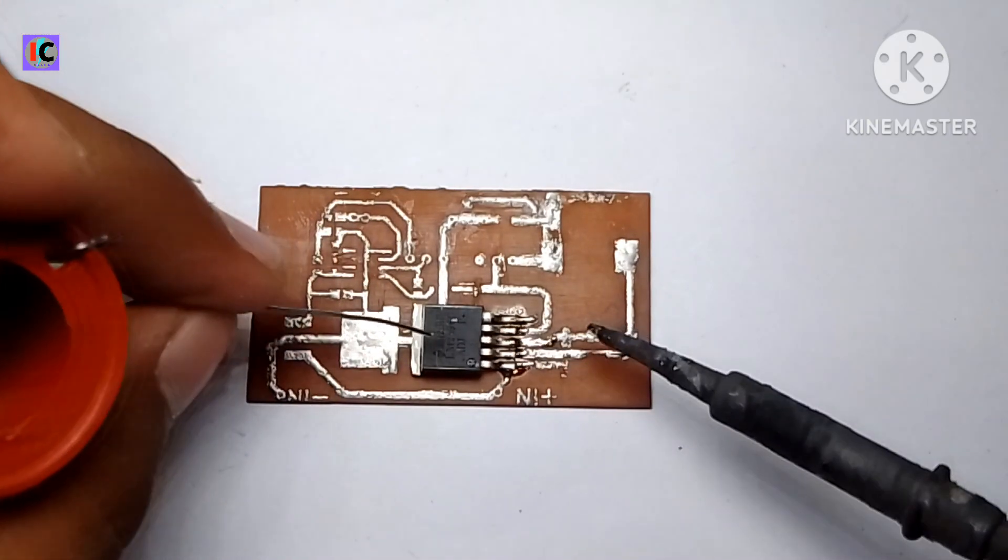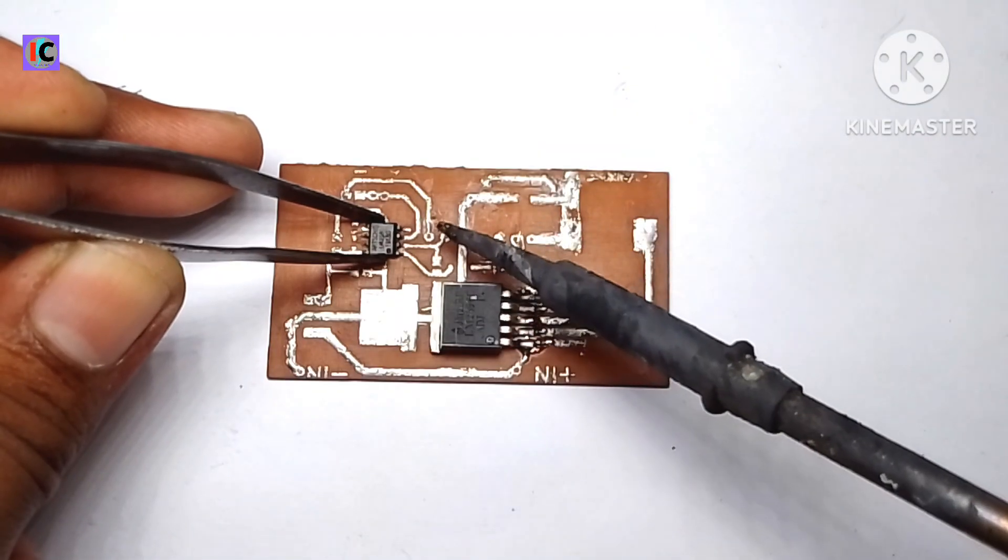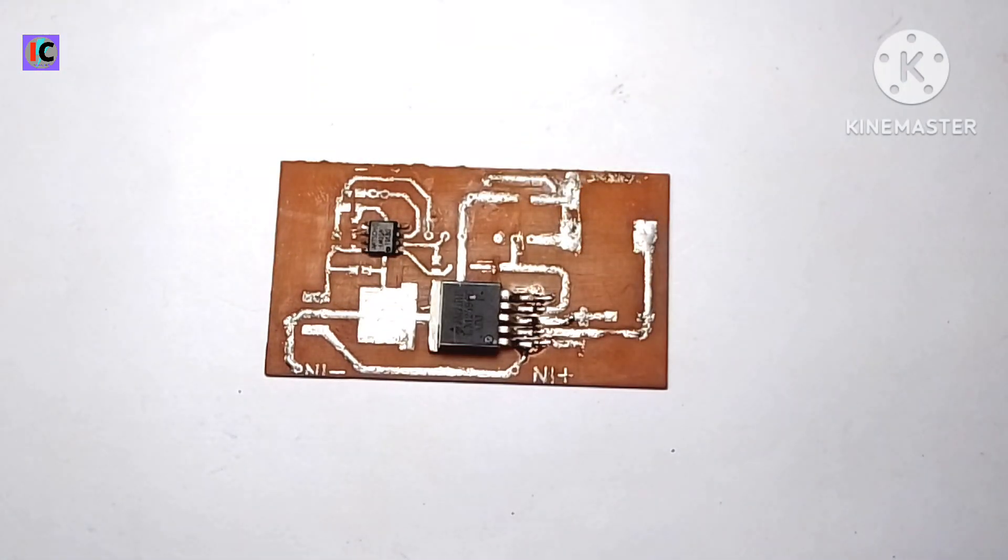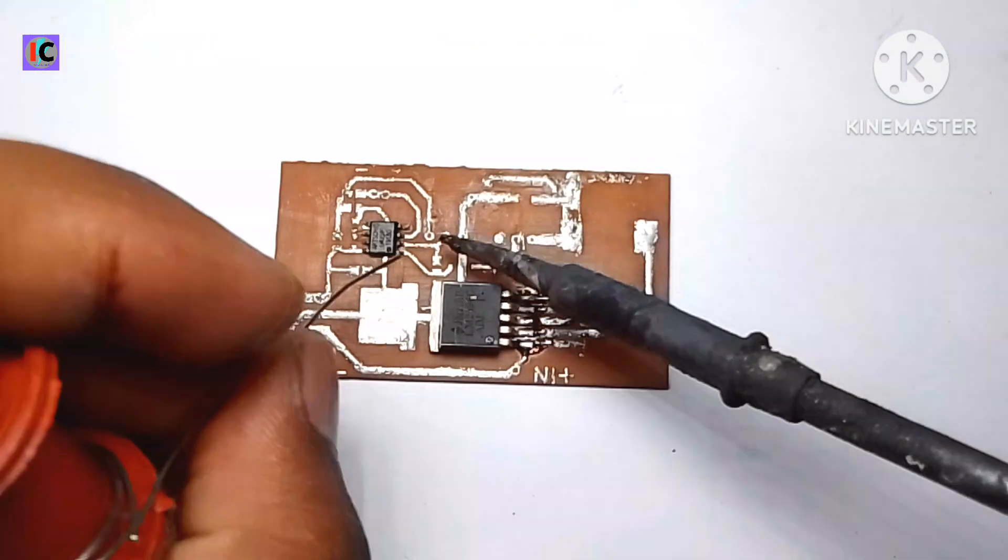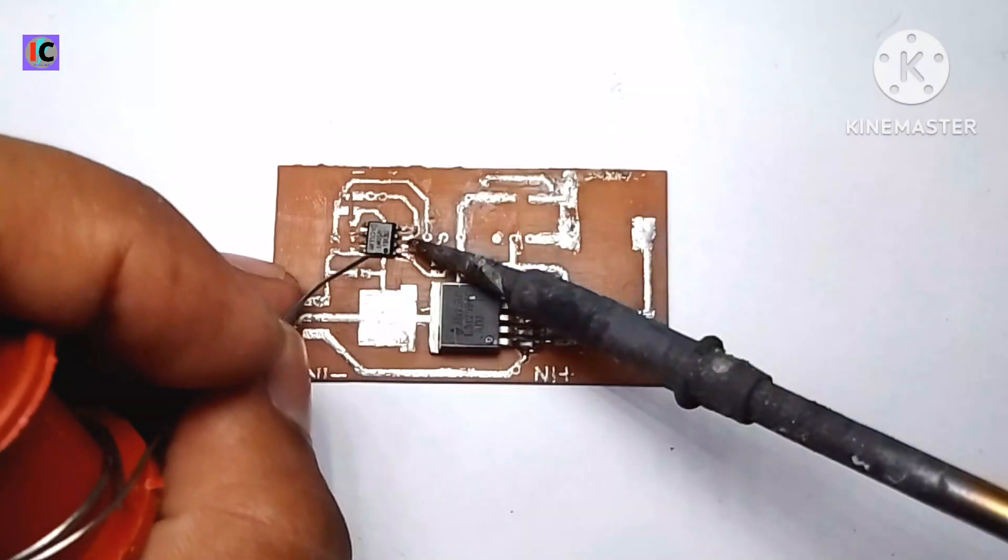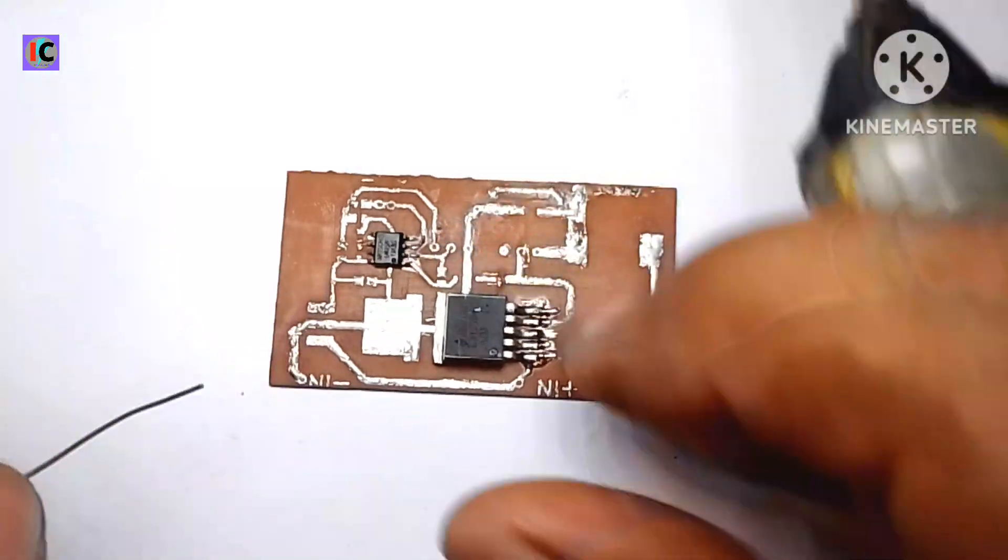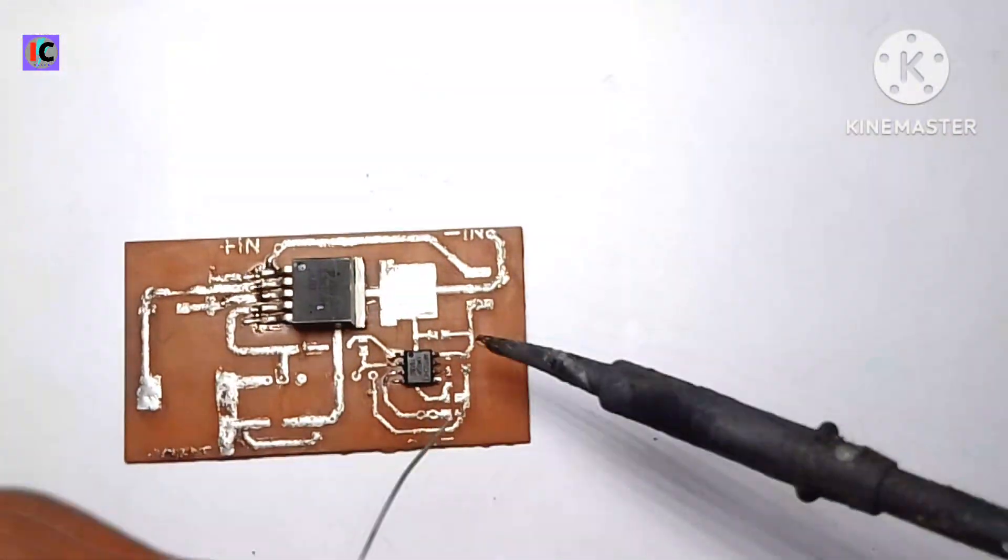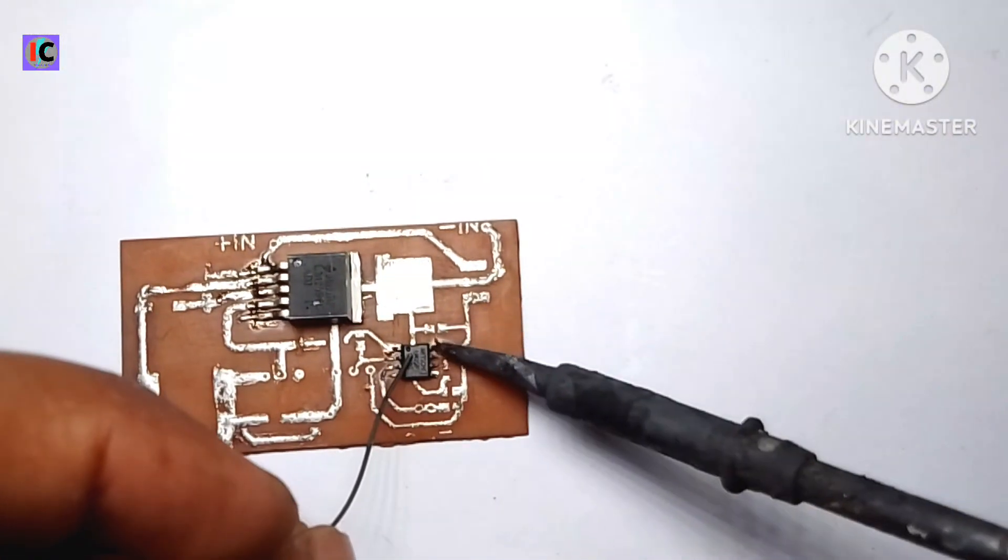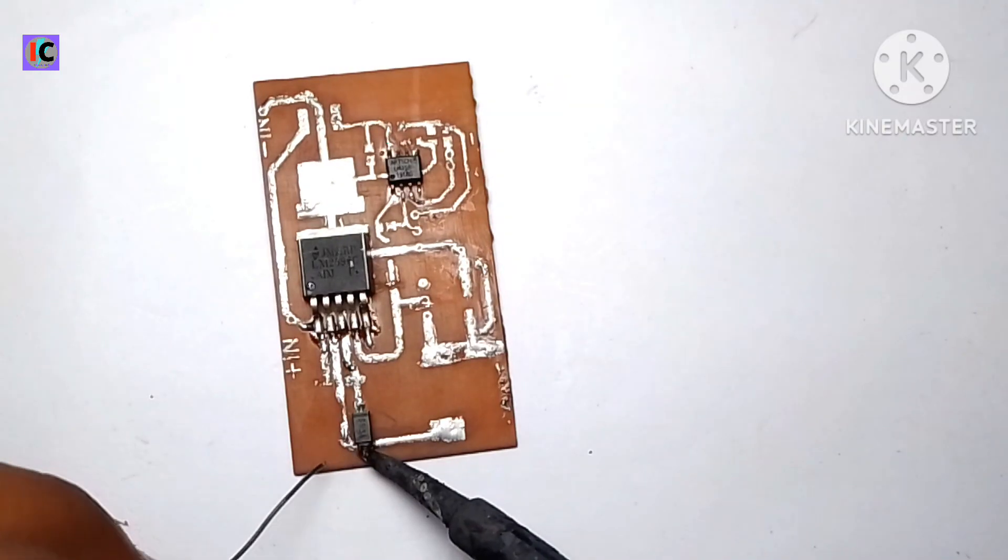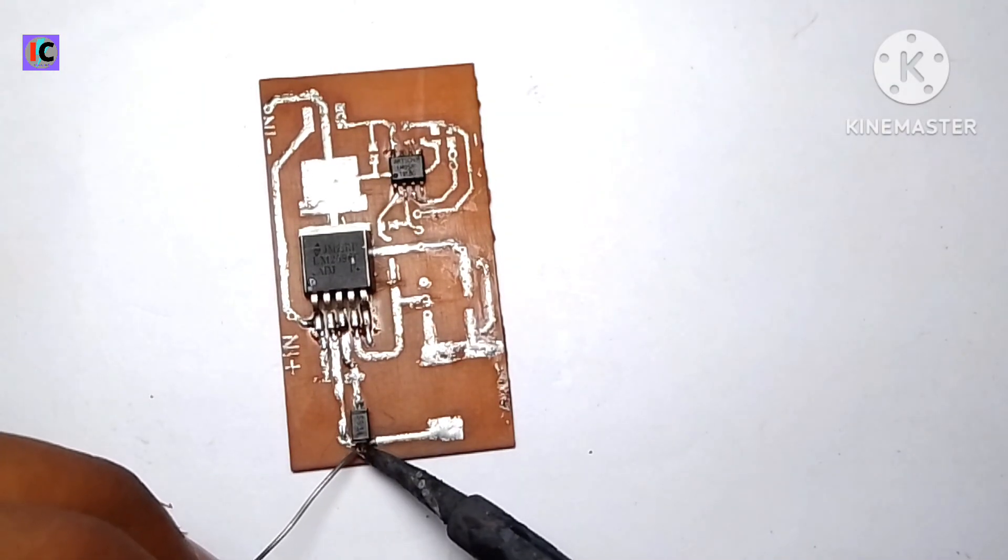Here is the IC which you can see written on it - the LM2596. This is the 5-pin based buck converter IC. Now we're going to replace all the components on the PCB which I will provide all the details of in the description.